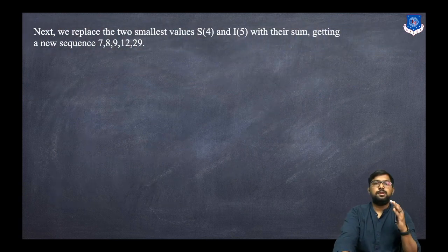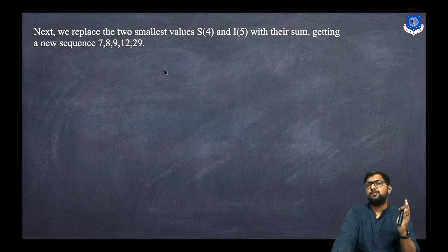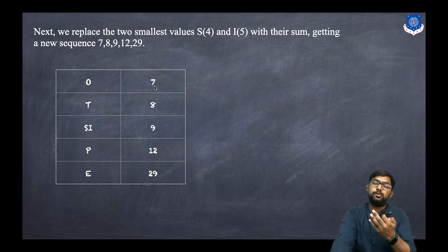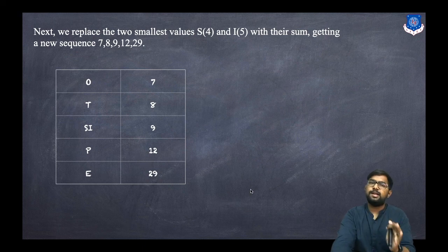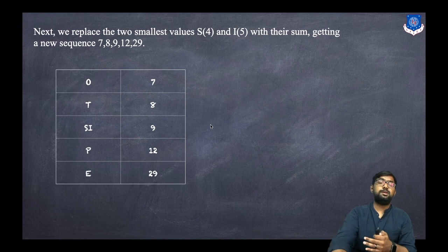In the second step, we replace the two smallest values 4 and 5 with their sum 9, giving new frequencies: 7, 8, 9, 12, and 29. Sorted in increasing order these are: o=7, t=8, si=9, p=12, e=29. The next two smallest are o with 7 and t with 8, so we construct another binary tree for them.